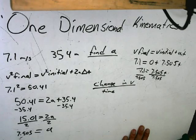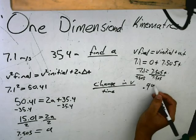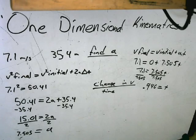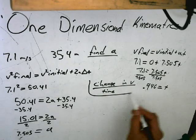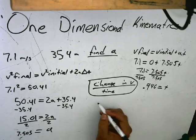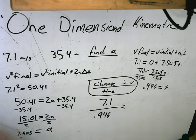So therefore, now that we have time which is 0.946, we are now able to find the acceleration. We take the change in velocity which is 7.1 over 0.946, which equals 7.505. This means that the acceleration equals 7.505.